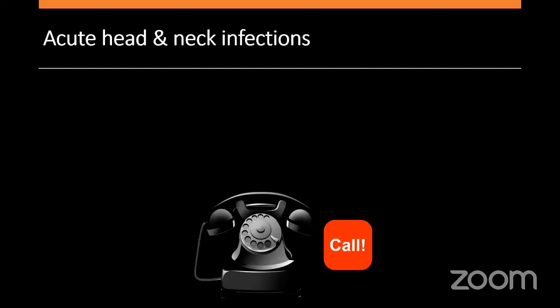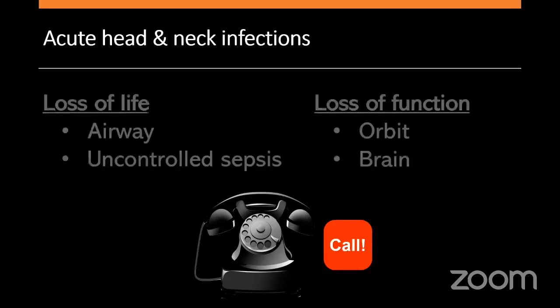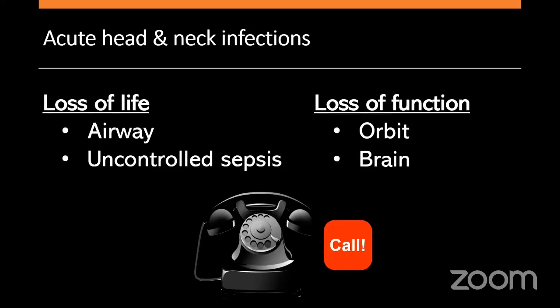I have no relevant disclosures. Whenever you receive a call from the emergency department with a case of acute head and neck infection, you should be very careful, because sometimes these patients may progress very badly — with impact on their life, especially if the airway is compromised, if lesions progress to uncontrolled sepsis, or if there is loss of function of an eloquent organ such as the orbit or the brain, where most lesions have high potential for intracranial spread.